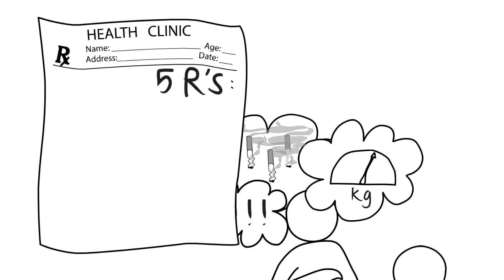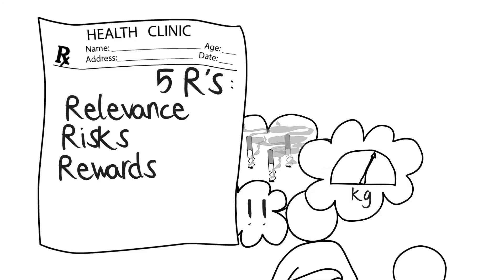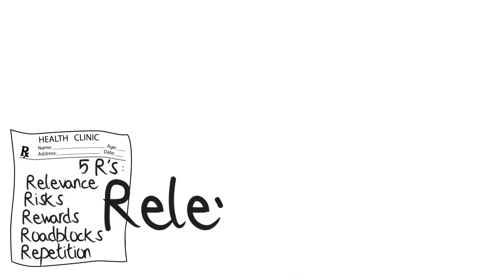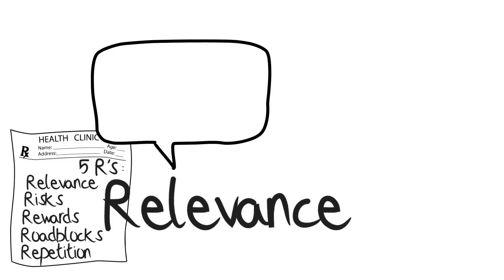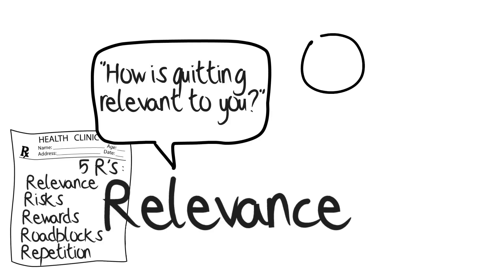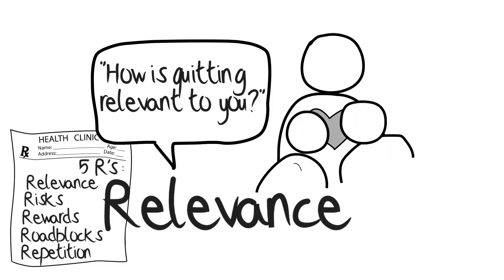The R's stand for Relevance, Risks, Rewards, Roadblocks, and Repetition. Let's look at each R individually. The first R: Relevance. Ask the patient, 'How is quitting relevant to you?' If the patient does not think it is relevant, you may try explaining how quitting can improve his or her own health and the health of their family.